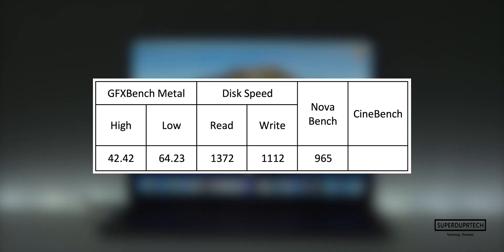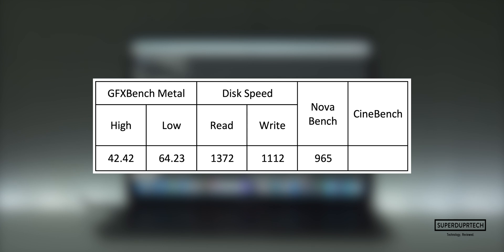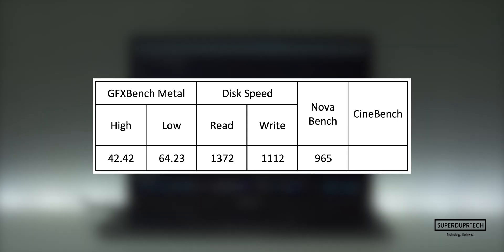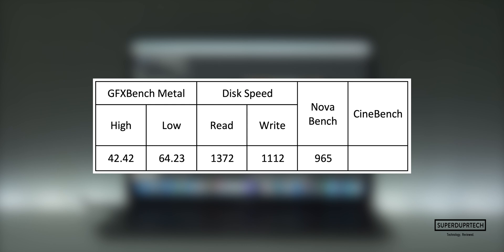Next I ran Cinebench, which is a good benchmarking program as it tests each individual thread and then gives a score, similarly to how Geekbench gives a score based on the time taken to complete the task. With this MacBook Air I got a score of 634.